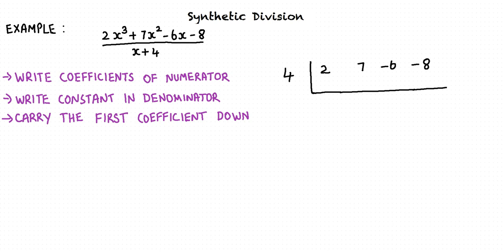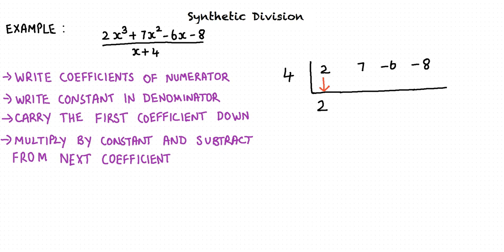Then we carry the first coefficient down as it is. In this case, the first coefficient is 2 and we write the 2 below as it is. Next, multiply the constant term in the denominator by the first coefficient and subtract it from its immediate coefficient on the right. Here we get 4 times 2 is 8. Now we subtract 8 from 7 and we get -1.